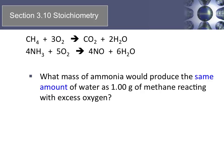Here's a practice problem to try. What mass of ammonia would produce the same amount of water as one gram of methane reacting with excess oxygen? Both equations have water in them. Ammonia is NH3 — that's what you're trying to find. Methane is CH4. You start with one gram of methane. Pause for a moment and try to work out this problem.